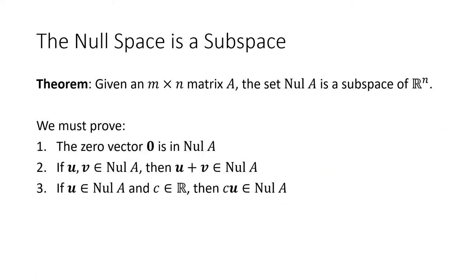Here's an important theorem. The null space of any matrix A is a subspace of Rn. From the previous lecture, we've got three things to prove: the zero vector is in the null space, if you have two vectors in the null space then their sum is in the null space, and if you have a vector in the null space and any scalar, then that scalar times the vector is also in the null space.